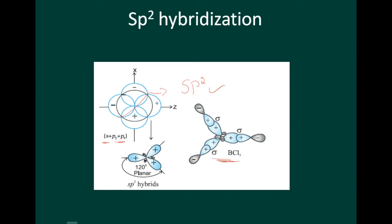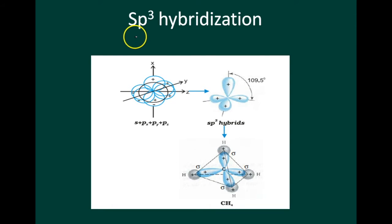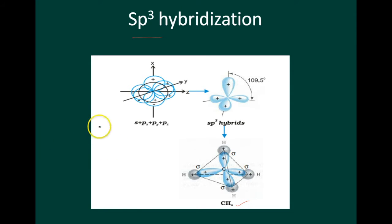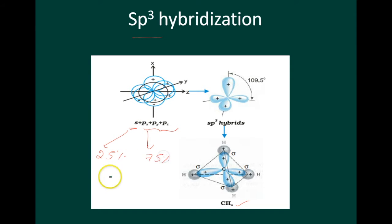Next is sp³ hybridization. This type of hybridization can be explained by taking the example of the CH₄ molecule, in which there is a mixing of one s orbital and three p orbitals of the valence shell to form four sp³ hybridized orbitals of equivalent energy and shape. The s character is 25% and the p character is 75%, formed by combination of s, px, py, and pz atomic orbitals of carbon.